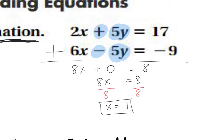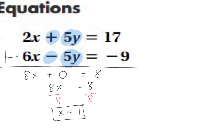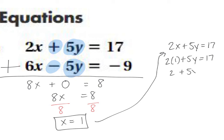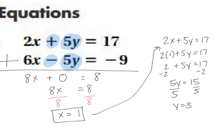To find y, we plug x = 1 back into the first equation: 2x + 5y = 17 becomes 2(1) + 5y = 17, so 2 + 5y = 17. Subtract 2 from both sides: 5y = 15. Divide by 5: y = 3. So our solution using elimination is x = 1, y = 3. We canceled out the y's, found x, then plugged back in for y.